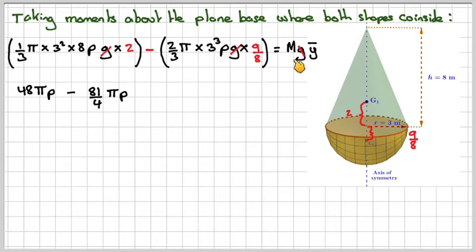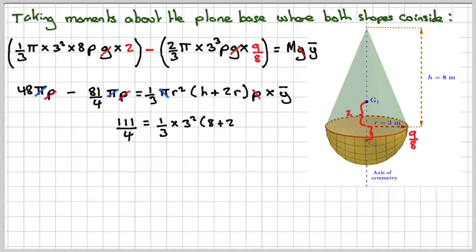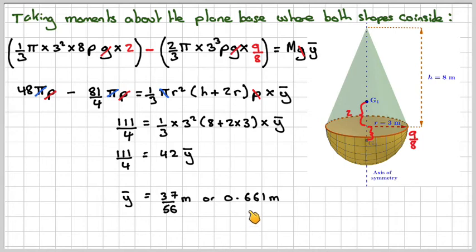And then take away two thirds times three cubed times nine eighths will give me 81 over four, and we still have the pi times rho. The total mass from before is going to be one third of pi r squared times h plus two r times rho times the center position of the center of gravity that we're trying to find. The rhos will cancel out and also the pi's will cancel out. So if we do 48 minus 81 over four we're going to get 111 over four, and here we will need to put in some numbers. When I work this out, I just get 42 times y bar, and therefore y bar will be 37 over 56 meters or 0.661 meters.